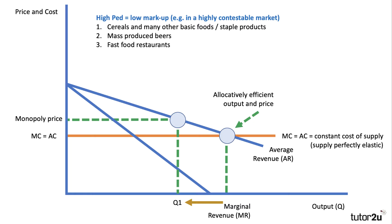These tend to be low markup products. In a highly contestable market, the difference between price and cost is relatively low — profitability often comes from selling huge volumes. Think about basic foods, cereal, staple supermarket products, mass-produced beers, or fast food restaurants where intense competition keeps prices relatively low. Competition makes demand more price elastic, so the monopoly price at output Q1 is not massively above marginal and average cost. There is still a deadweight welfare loss because price is above marginal cost.